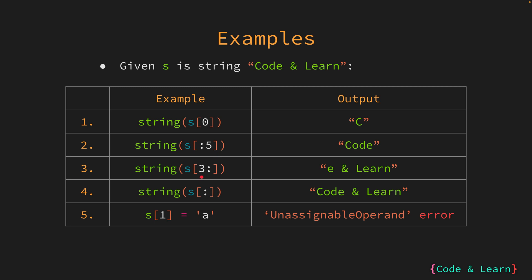In the next example, the expression extracts a slice of the string starting from index 3 until the end. This includes characters at index 3 and beyond, resulting in the string 'e and learn'. The following slicing expression creates a complete copy of the string, essentially returning the entire string itself, which is 'code and learn'.